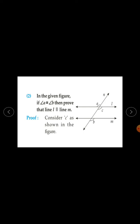Question number 2: In the given figure, if angle A is congruent to angle B, then prove that line L is parallel to line M. Two lines are given — line L and line M — and N is the transversal. This is angle A and this is angle B. It is given that angle A is congruent to angle B.